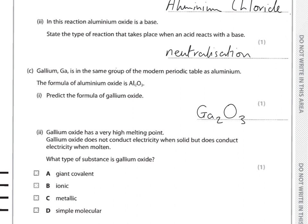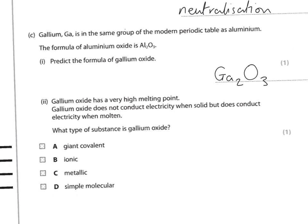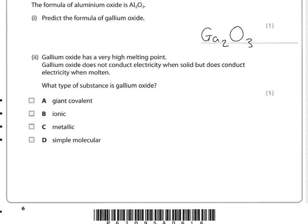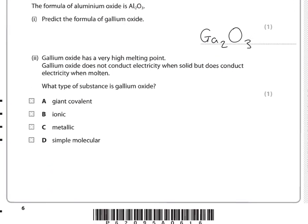The last part of question three asks: gallium oxide has a very high melting point and does not conduct electricity as a solid but does conduct when molten. What type of substance is gallium oxide? Gallium is a metal and oxygen is a non-metal, so it's going to be an ionic compound — an ionic compound formed between a metal and a non-metal.